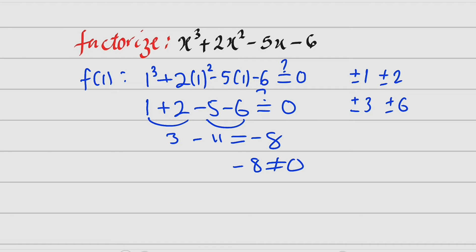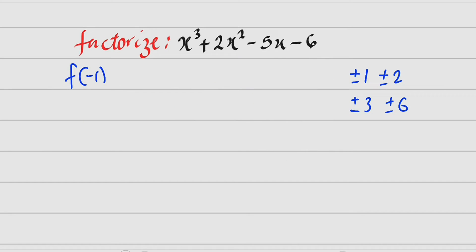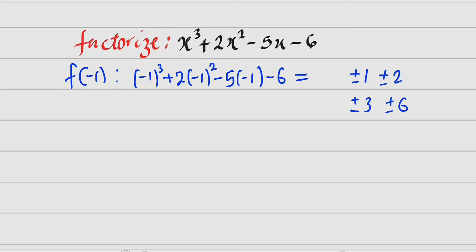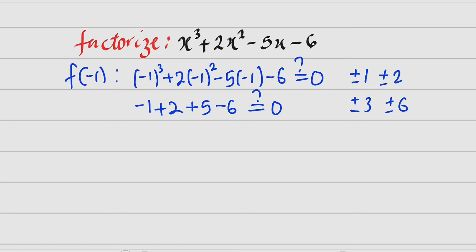Now, let us test for negative 1. If x is negative 1, we have negative 1 to the third power, plus 2 multiplied by negative 1 to the second power, minus 5 multiplied by negative 1, and minus 6. Is this equal to 0? Negative 1 to the third power is negative 1; negative 1 squared is positive 1, times 2 is 2; then minus minus is plus, so 5 times 1 equals 5, minus 6. This gives 0, and hence negative 1 is one of the roots of this cubic polynomial.